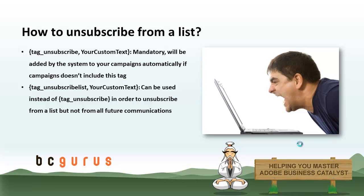As an alternative, you can also include the 'tag_unsubscribe_list' tag, which is a hyperlink enabling recipients to unsubscribe from the list associated with this campaign only — the customer will continue to receive other newsletters. You can also customize the link text using: tag_unsubscribe_list comma then your custom text.